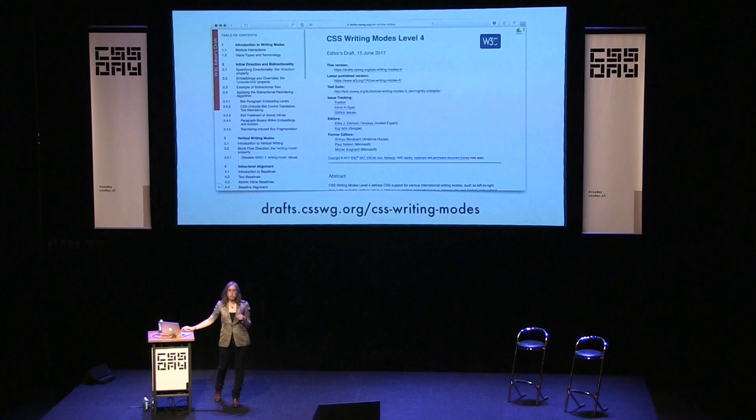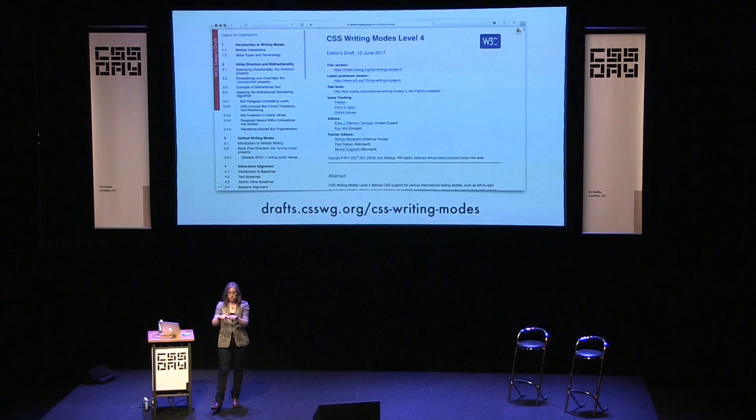There's no support for, say, ancient Egyptian hieroglyphic layouts, but there is support for all languages commonly used. Today I'm going to talk about three CSS properties: direction, writing-mode, and text-orientation. We'll get into all of those. But before we do, I'm going to go down a little bit of a rabbit hole into the display specification, which Rachel was talking about before.